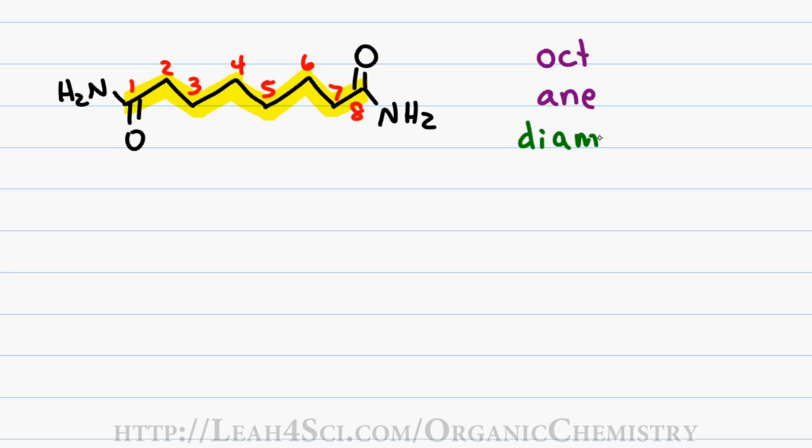And so we add the suffix diamide simply indicating that we have two amides on this molecule. Putting the pieces together, we get a final name of octanediamide, omitting numbers for the functional groups and also keeping the e in an because the consonant D in di separates between the two vowels.